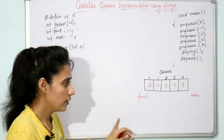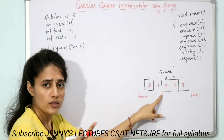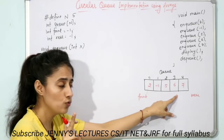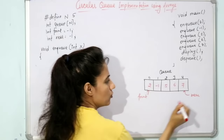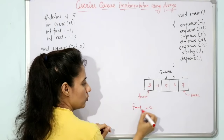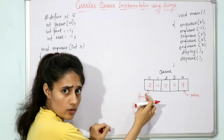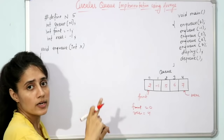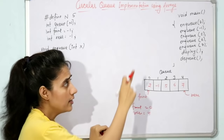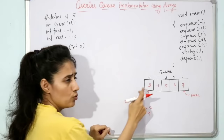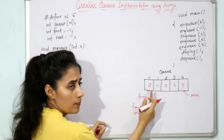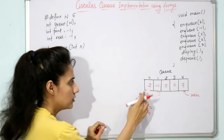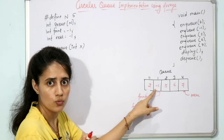If you call enqueue again, it will show 'queue is full'. The full condition is when front is 0 and rear is 4, i.e., rear equals n minus 1. Now if we call dequeue, we delete from the front — front increments, so front points to index 1. The previous position becomes a garbage value; only data between front and rear is our valid queue.